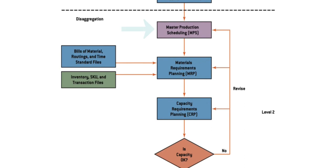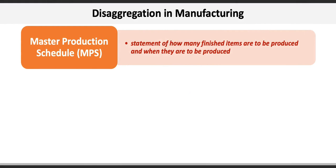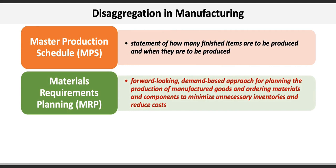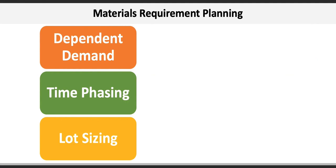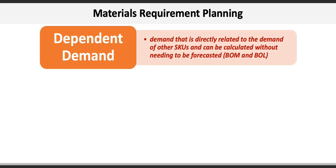A master production schedule is a statement of how many finished items are to be produced and when they're to be produced. Materials requirements planning is a forward-looking, demand-based approach for planning the production of manufactured goods and ordering materials and components to minimize unnecessary inventories and reduce costs. MRP also involves three elements including dependent demand, time phasing, and lot sizing. Dependent demand is demand directly related to the demand of other SKUs and can be calculated without needing to be forecasted — these can include bill of materials or bill of labor. Here's a sample BOM showing how the production of product or component A is dependent on making components B and F, each of which require additional components or parts.